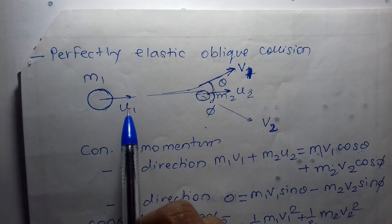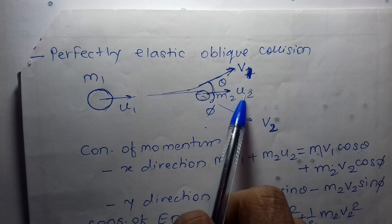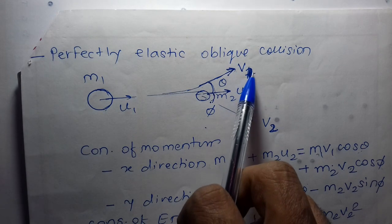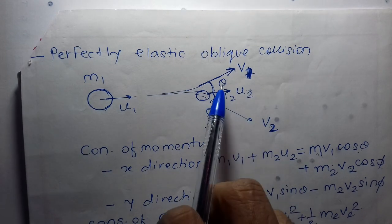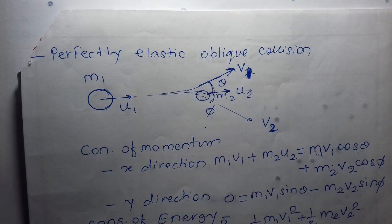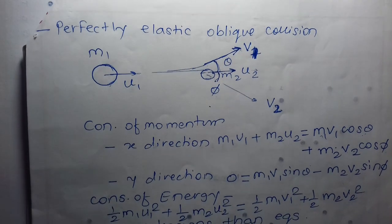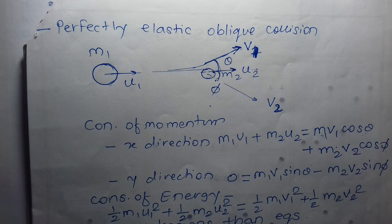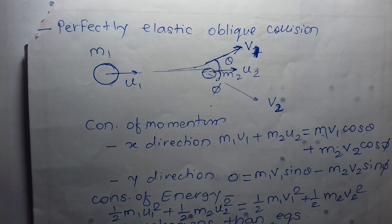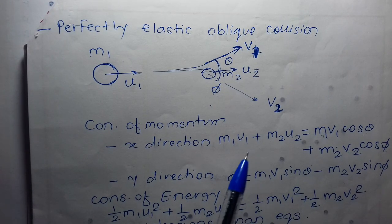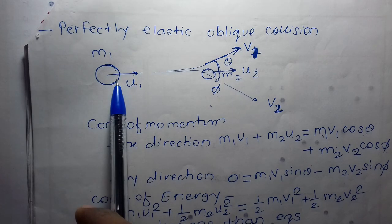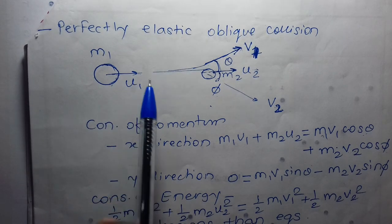m1, u1 are provided; m2 and u2 are also given. We have to find out v1, v2, theta, and phi — so there are four unknowns. First, we'll write the equation for conservation of momentum in the x-direction.